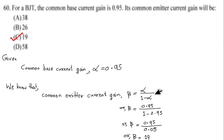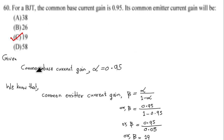Beta is equal to alpha divided by 1 minus alpha. With alpha equal to 0.95: beta equals 0.95 divided by (1 minus 0.95), which equals 0.95 divided by 0.05, giving 19. Option number C is the correct answer. So this covers question number 51 to 60 where alpha and beta are the transistor current gain parameters.